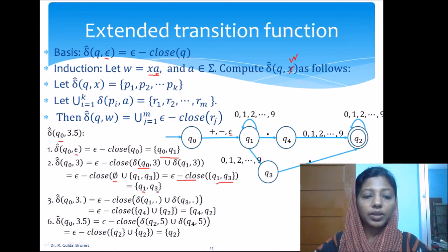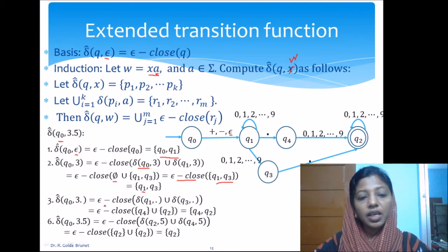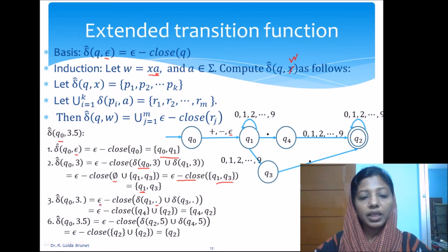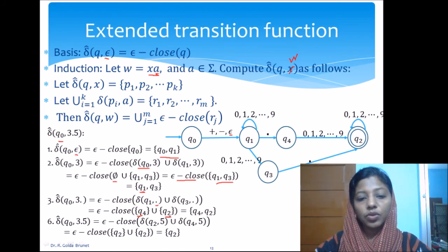Next, delta-cap of q₁ on '3.' followed by the decimal point: we compute the epsilon closure of delta(q₁, dot) union delta(q₃, dot), then apply the epsilon closure to the result. From q₁ on a decimal point we go to q₄, and from q₃ on a decimal point we go to q₂. Applying epsilon closure to this union: epsilon closure of q₄ is {q₄} and epsilon closure of q₂ is {q₂}, giving the result {q₂, q₄}.